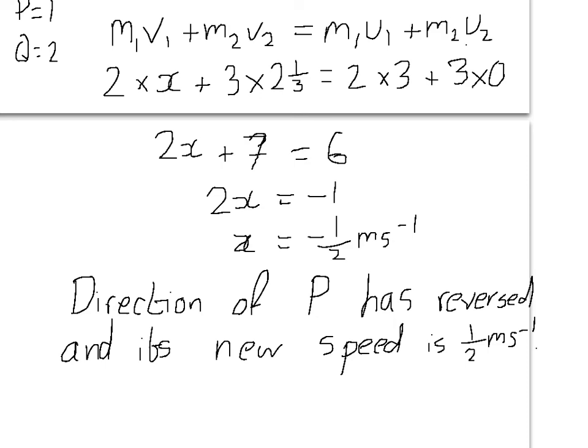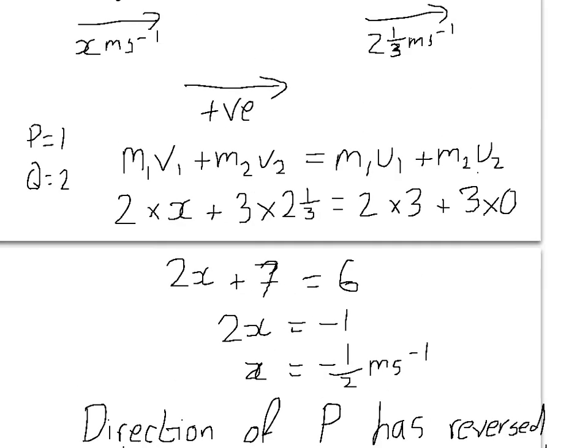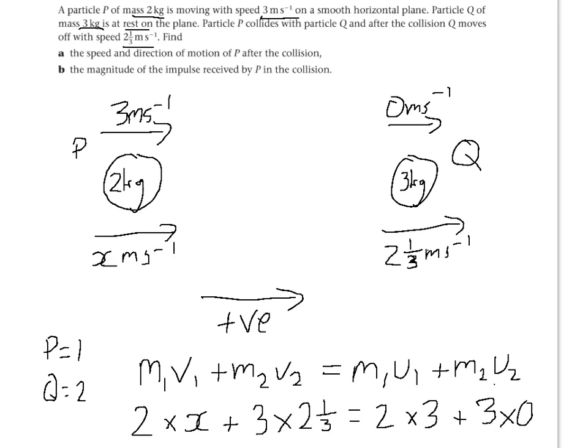Right, that's part A completed. Now, let's look at part B. So part B, we're asked to find out what the impulse is of P receives from Q.